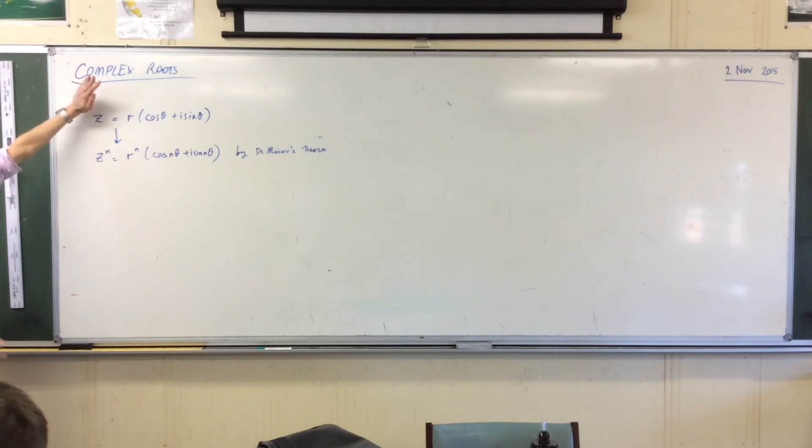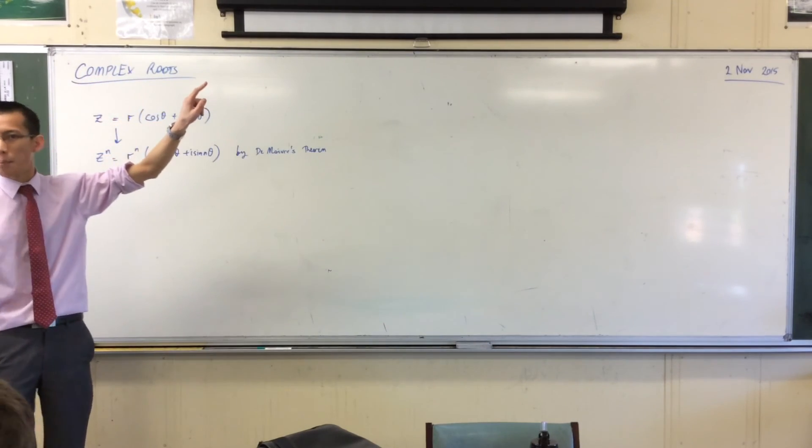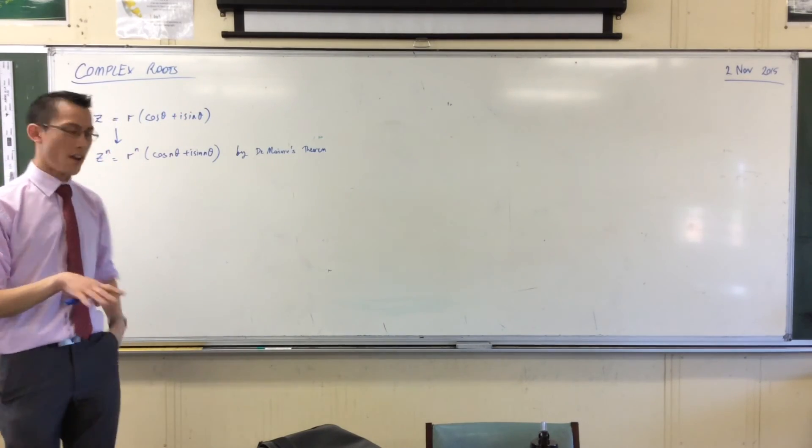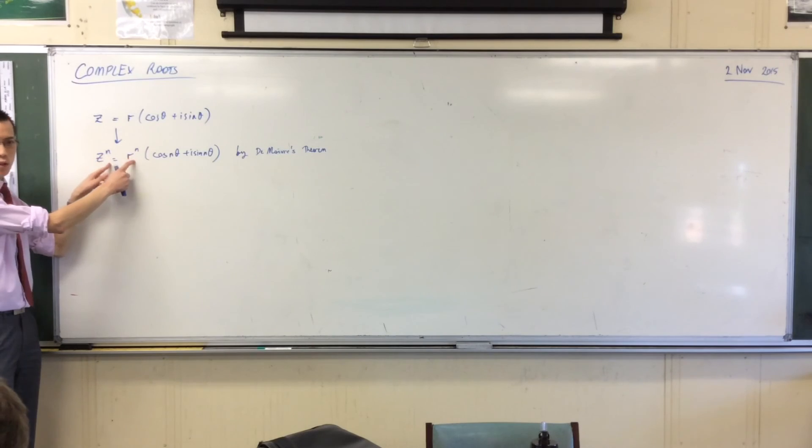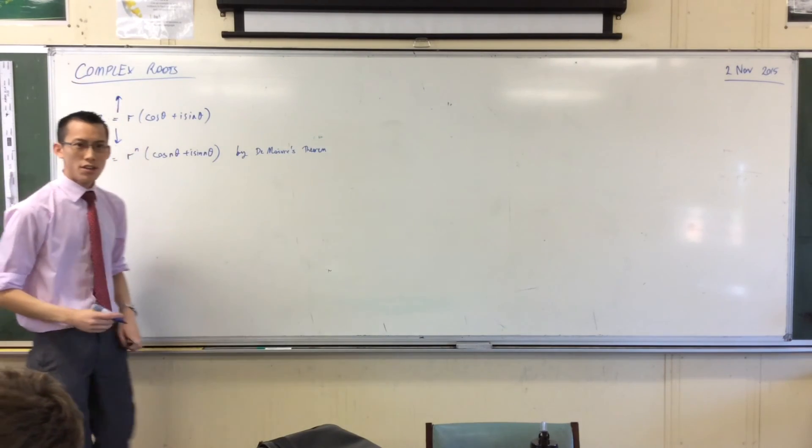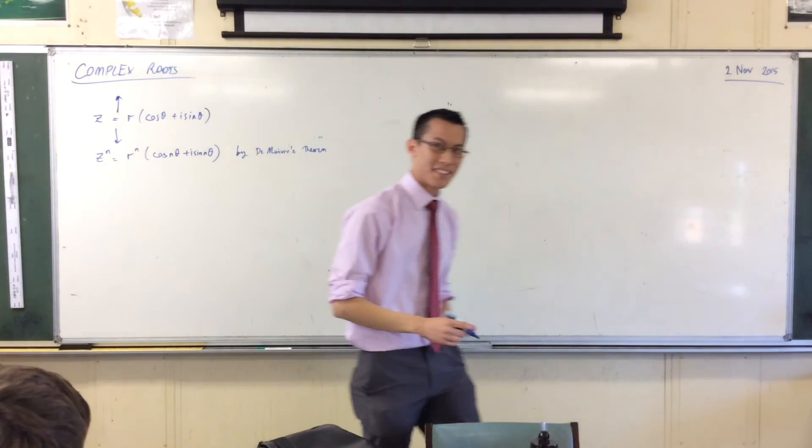But complex roots, roots is about going in the opposite direction. If I say square root, or cube root, or fourth root, or whatever, it's instead of multiplying, it's by having division. So if I go backwards, why not?